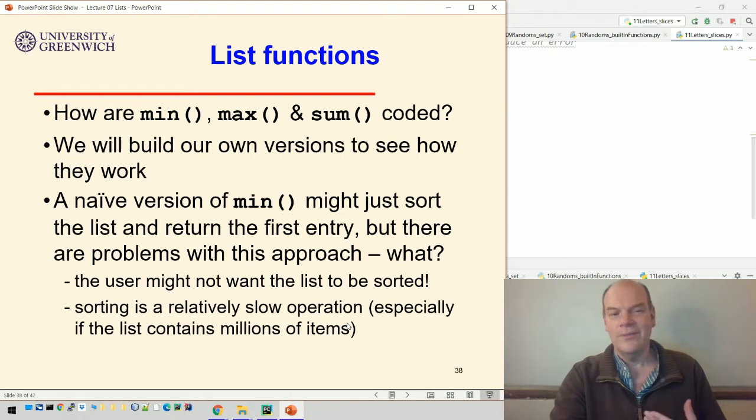For example, if you do that, you might annoy the user because they don't want their list sorted. They just wanted to know what the minimum value was. And the second thing that might be a problem is that lists can have hundreds or thousands or millions of values in and sorting is relatively slow. So if you sort an enormous list that could take anything from minutes to hours to do. Whereas finding a minimum value is actually much quicker than that in general.